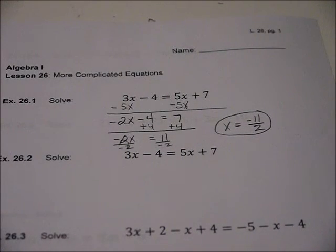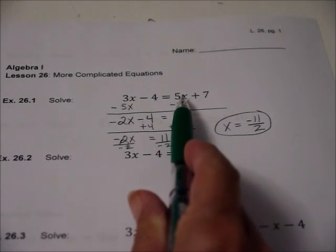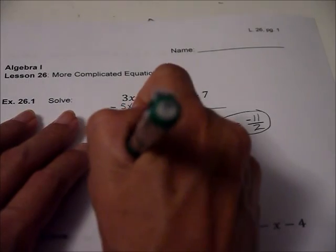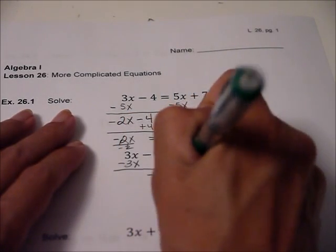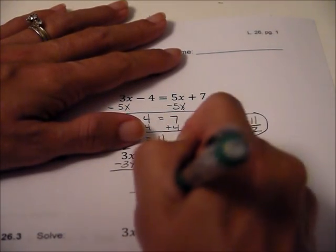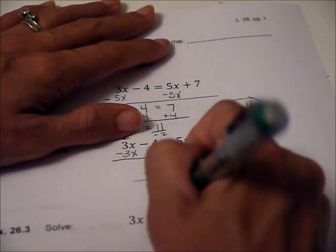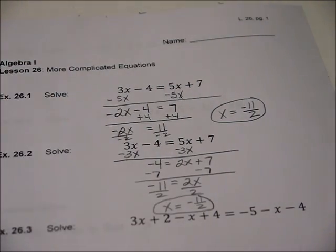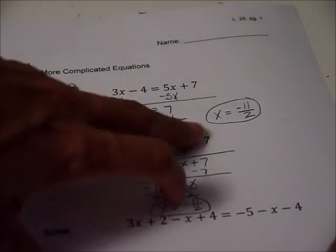Now there's another way we could solve it. Last time we took five x away from both sides. Since five x is the positive one, I tend to have that one be where everybody goes. I see five x is bigger than three x. So I'm going to go ahead and subtract three x from both sides. I like it to be positive when I combine my like terms, if I can. So then I get this. And now we're going to subtract seven from both sides. And we get negative eleven equals two x. And we get x equals negative eleven halves. So the whole point of doing the same thing here and here, to show you that there's two ways to do it. And either way, it gets us down to the right answer if you follow the steps and follow the rules.